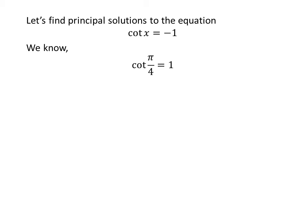We know the value of cotangent of pi upon 4 is 1. We also know the trigonometry identity: cotangent of pi minus a is equal to minus cotangent of a. The proof of this identity is given in a linked video referenced in the description section.